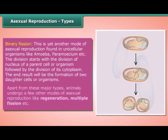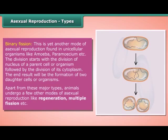Apart from these major types, animals undergo a few other modes of asexual reproduction, such as regeneration, multiple fission, and others.